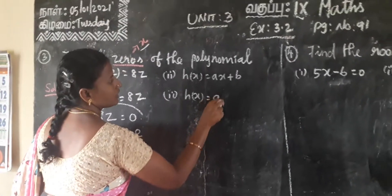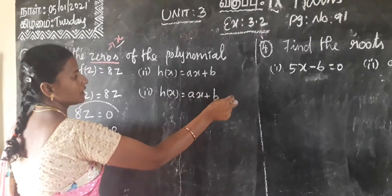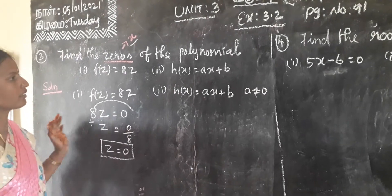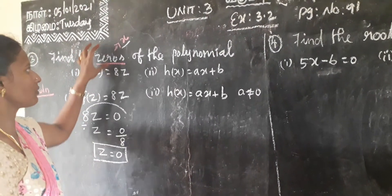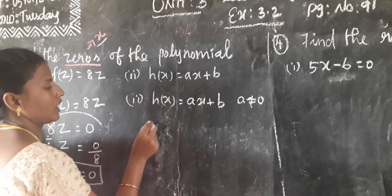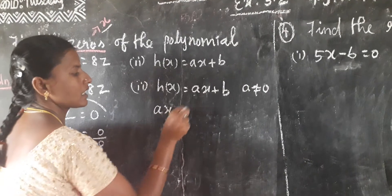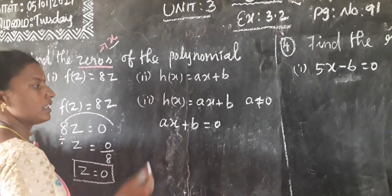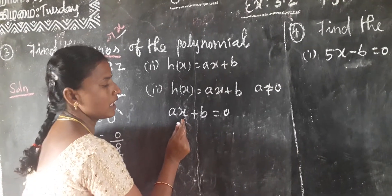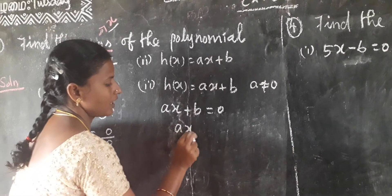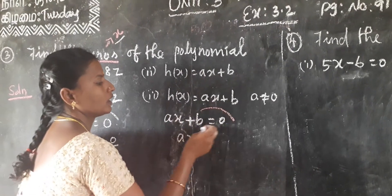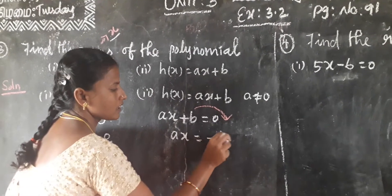The second one: H of x is equal to Ax plus B. Here A is not equal to 0. Zeros of the polynomial means the variable value. We have variable x in the right hand side. So we set Ax plus B equal to 0. AX is equal to minus B, with plus B going to the opposite side as minus B.